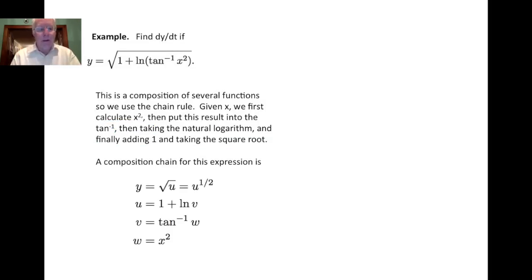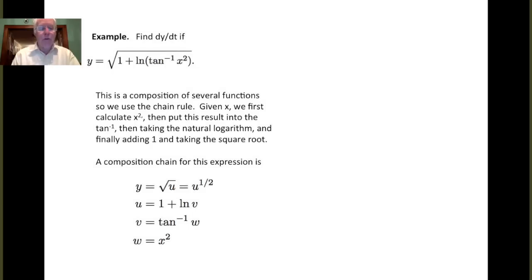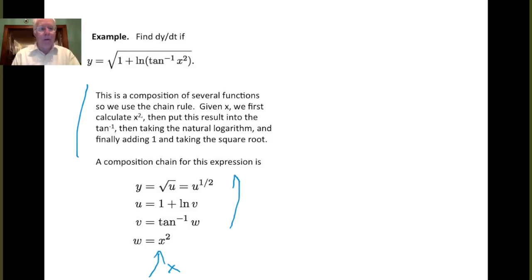We can write a composition chain for this, listed from the outside inward. We think of y equals the square root of u, or u to the 1 half. Then u equals 1 plus the log of v. Then v equals the inverse tangent of w. And finally, w equals x squared. Starting with x at the bottom and working up the list, by the time we've computed y, we have the value of the function. This shows the composition — really a composition of simple functions, all of which we know how to differentiate.